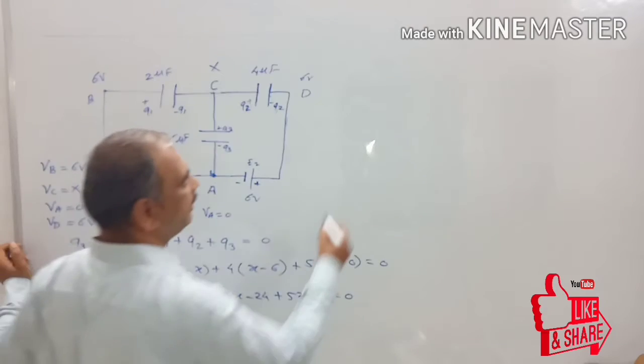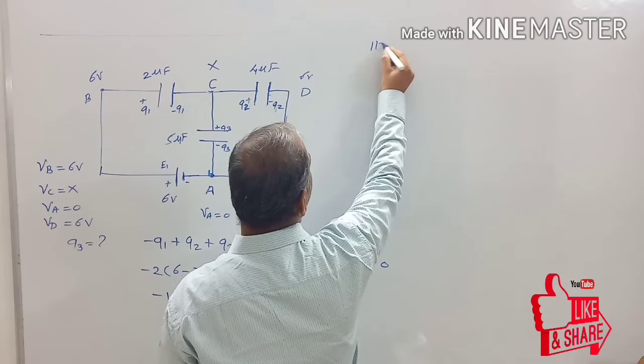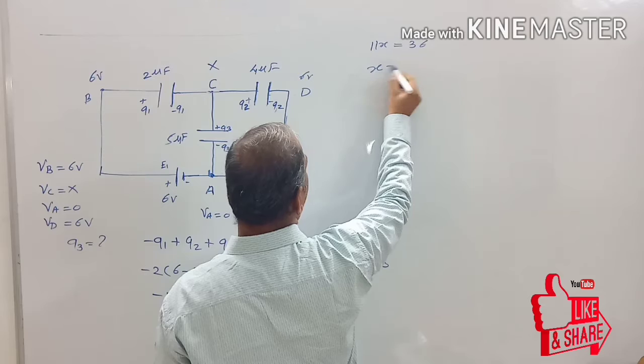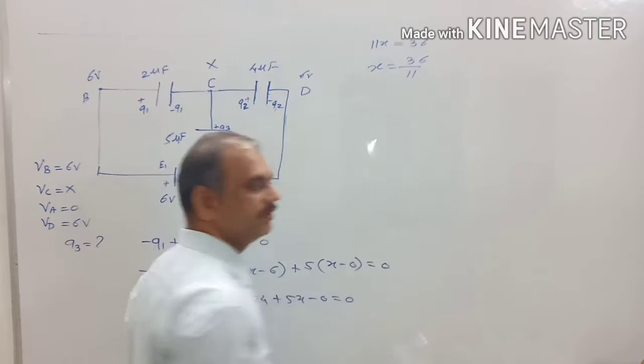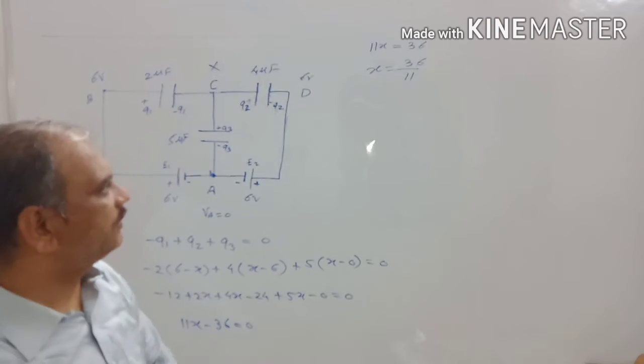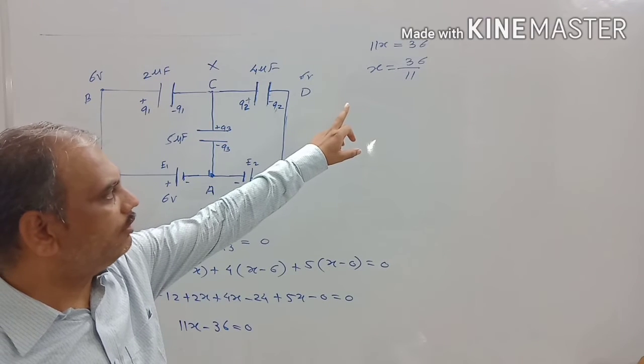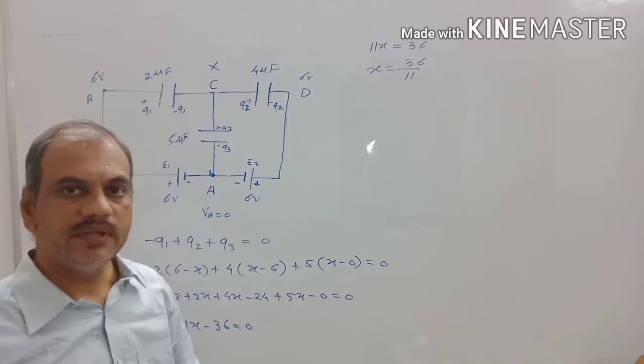Hence, we can write 11X equals to 36, and therefore X is equal to 36 upon 11. So at point X, the value of X is nothing but 36 upon 11.